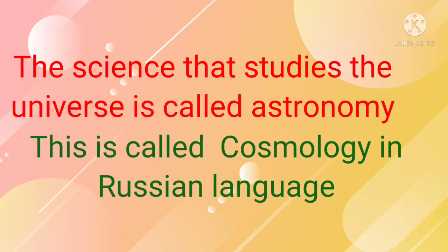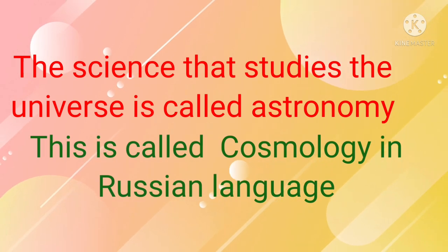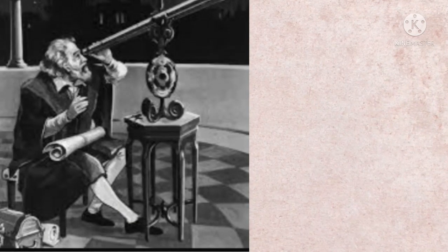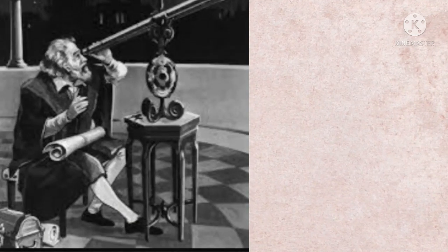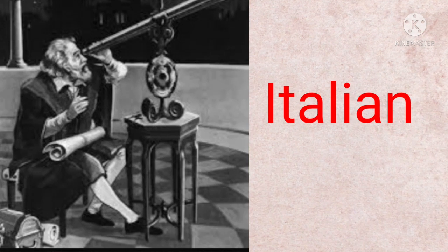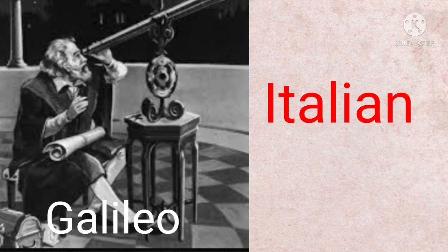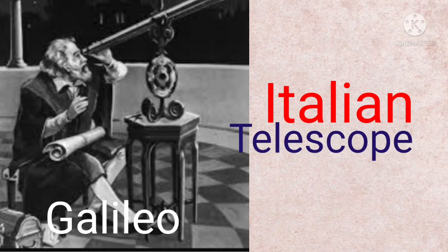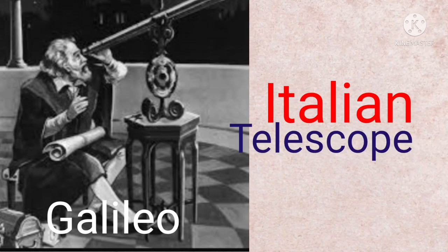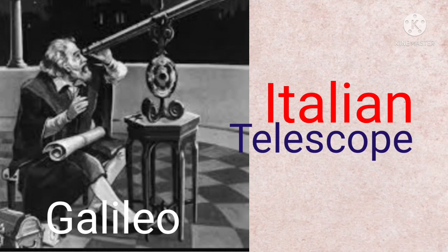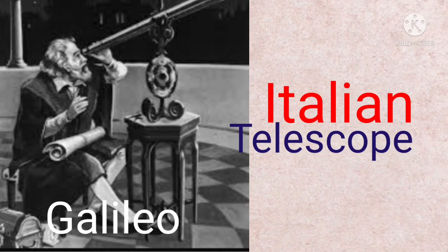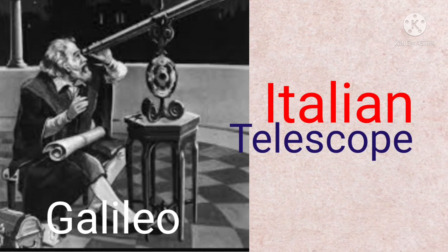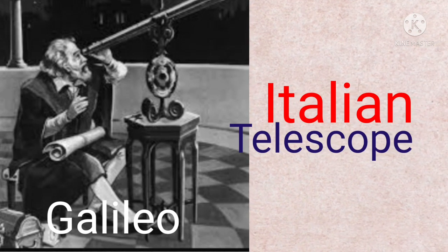Astronomy is called cosmology in Russian. Scientific research in astronomy began with Italian astronomer Galileo. He made a device called a telescope. When Galileo first looked at the sky through this instrument, he saw many wonders unknown to him. Can you guess what he saw in the sky?